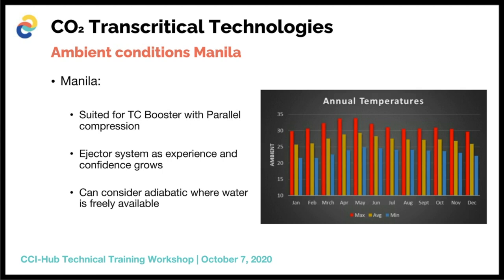Even worst-case high ambient conditions in the Philippines reach up to 34 degrees Celsius, still below 35 degrees, where parallel compression systems maintain better energy efficiency up to 37 degrees Celsius ambient. That's probably a guideline for what type of technology to introduce into the Philippine market. As more experience is gained, additional technologies like ejector systems can be introduced to further increase energy efficiency.